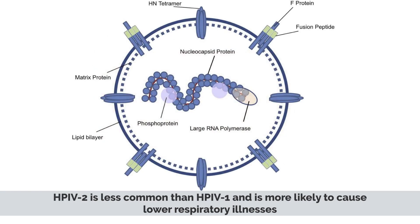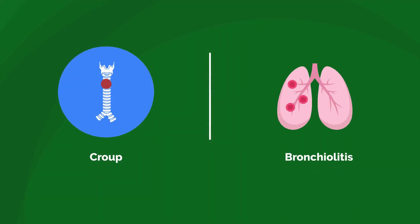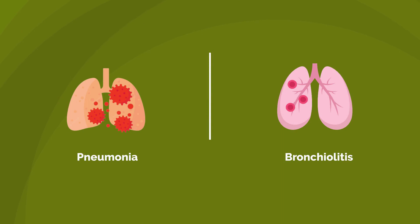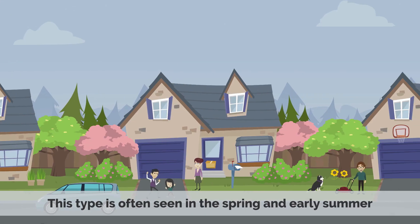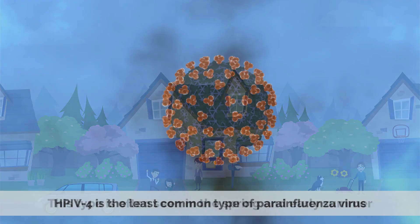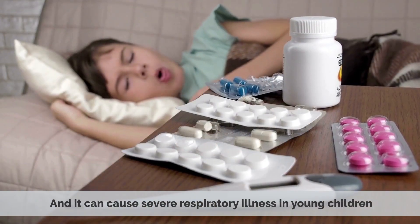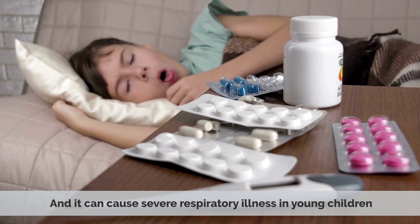HPIV2 is less common than HPIV1 and is more likely to cause lower respiratory illnesses such as croup and bronchiolitis. HPIV3 is a highly contagious type which causes pneumonia and bronchiolitis, and is often seen in the spring and early summer. HPIV4 is the least common type and can cause severe respiratory illness in young children.